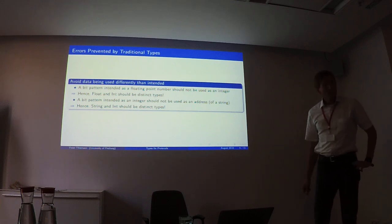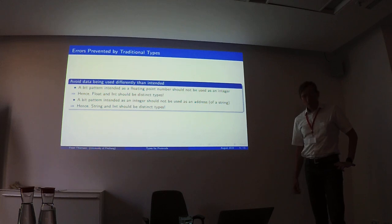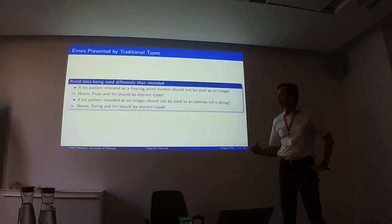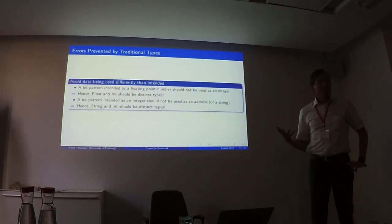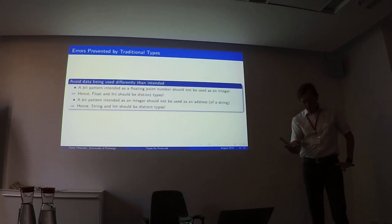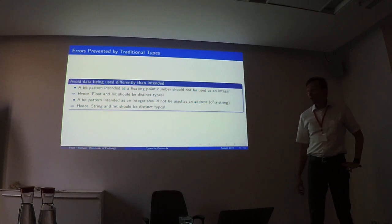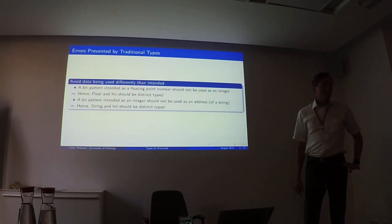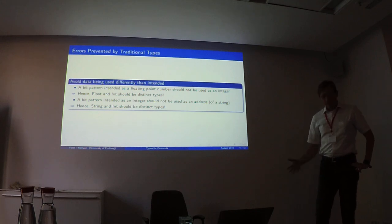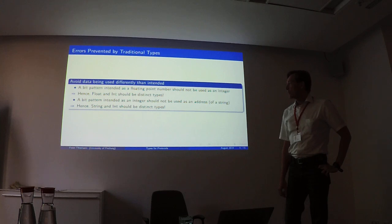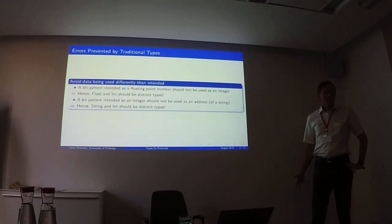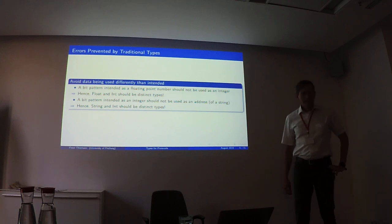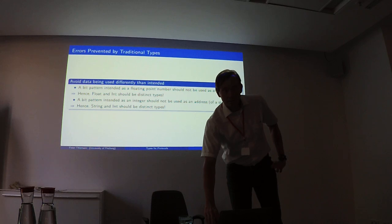I'd like to make a distinction between the traditional way types are used and the way they're going to be used for protocols. Traditional types give a guarantee that no type errors occur — that is, no misinterpretation of data. For example, in a computer every data type is represented by some bit pattern, and depending on whether it's intended as a floating-point number or an integer it makes a lot of difference. Anyone who's programmed in C and used unions knows about that. Therefore, floats and integers should be distinct types, and the type system's job is to avoid this confusion.